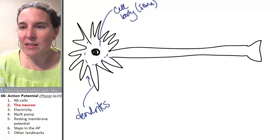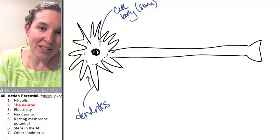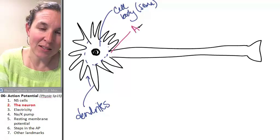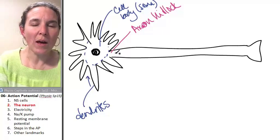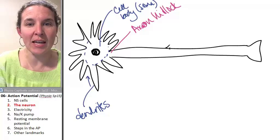There's a place on the neuron called the axon hillock. Axon hillock. And that's the place where the cell body meets the next structure, which is the axon.